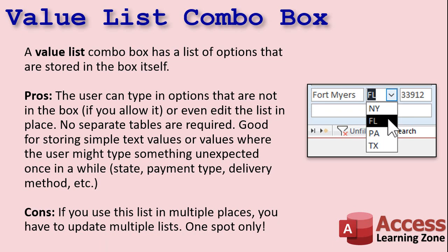So what is a value list combo box and how is it different from a relational combo box? A value list combo box has a list of options that are stored in the box itself. You usually set this list of options at design time when you build the combo box. This is good for storing simple text values or values where the user might type something unexpected once in a while, where you want to give them a list of options to pick from but they're still free to type in whatever they want.